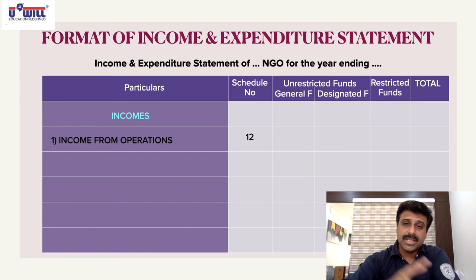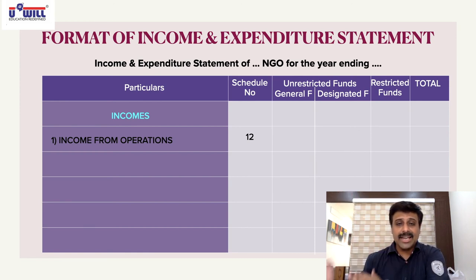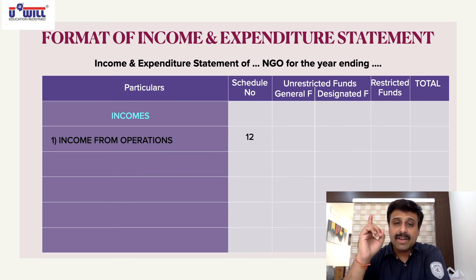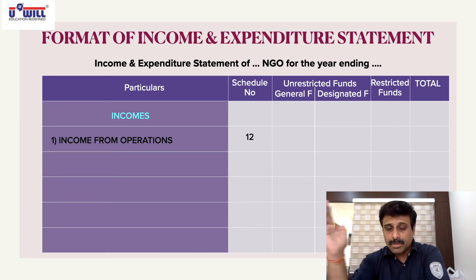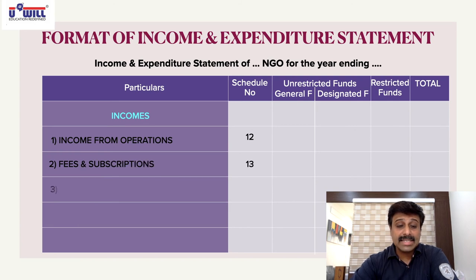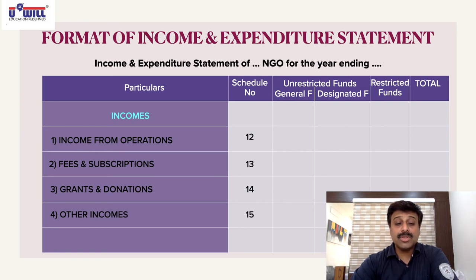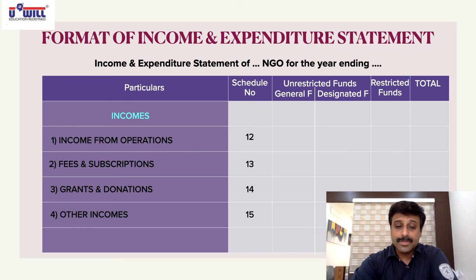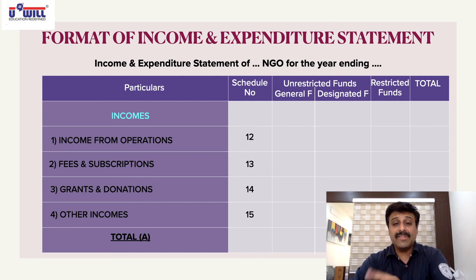The income and expenditure statement starts with Schedule 12 because Schedules 1–11 are used for the balance sheet. The four income categories are: income from operations (Schedule 12), fees and subscriptions (Schedule 13), grants and donations (Schedule 14), and other incomes — like interest on investments, dividends on investments (Schedule 15). Then mark Total A as the total of incomes.